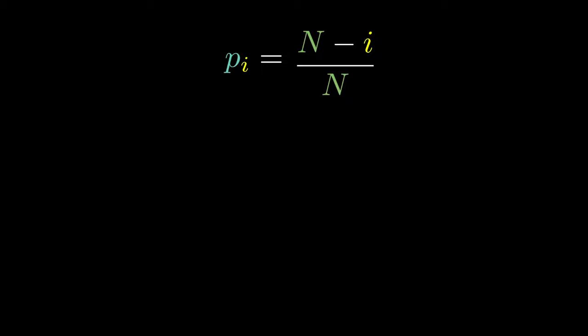So using the formula for the expected value, we know that the expected number of trials before a success is 1 over P. So the expected number of draws before getting the ith new coupon is 1 over p_i. Using the formula derived above, we can say that the expected value of the number of draws before getting the ith coupon is N over (N - i).